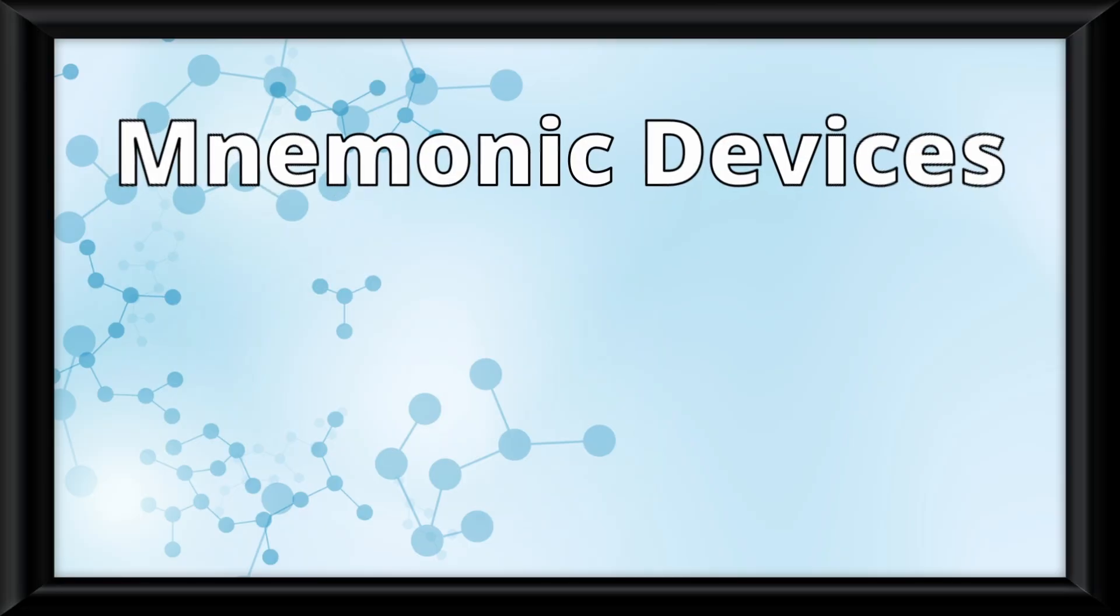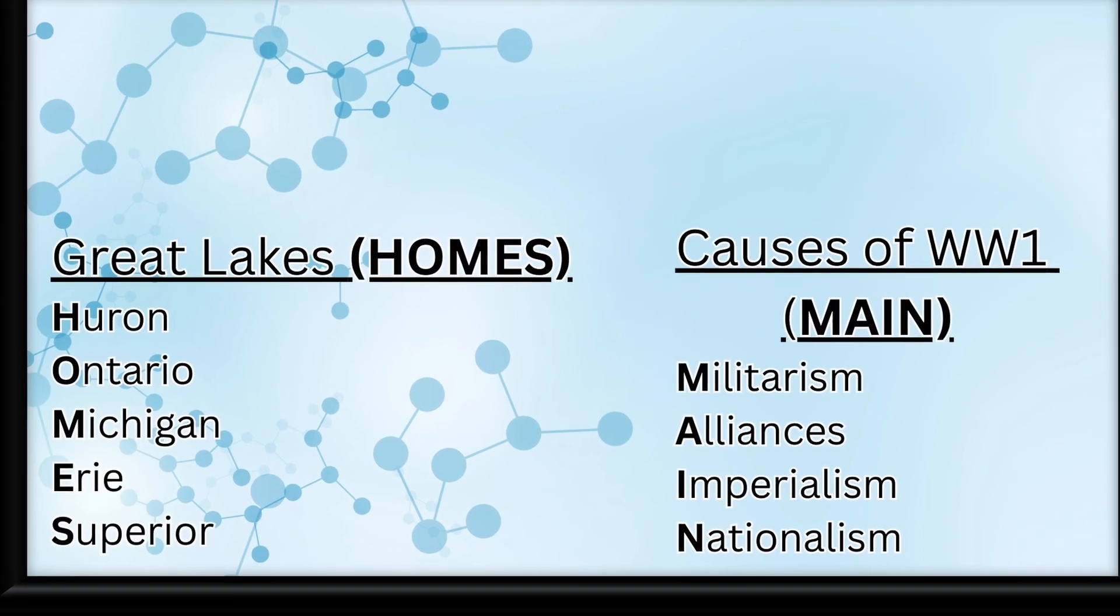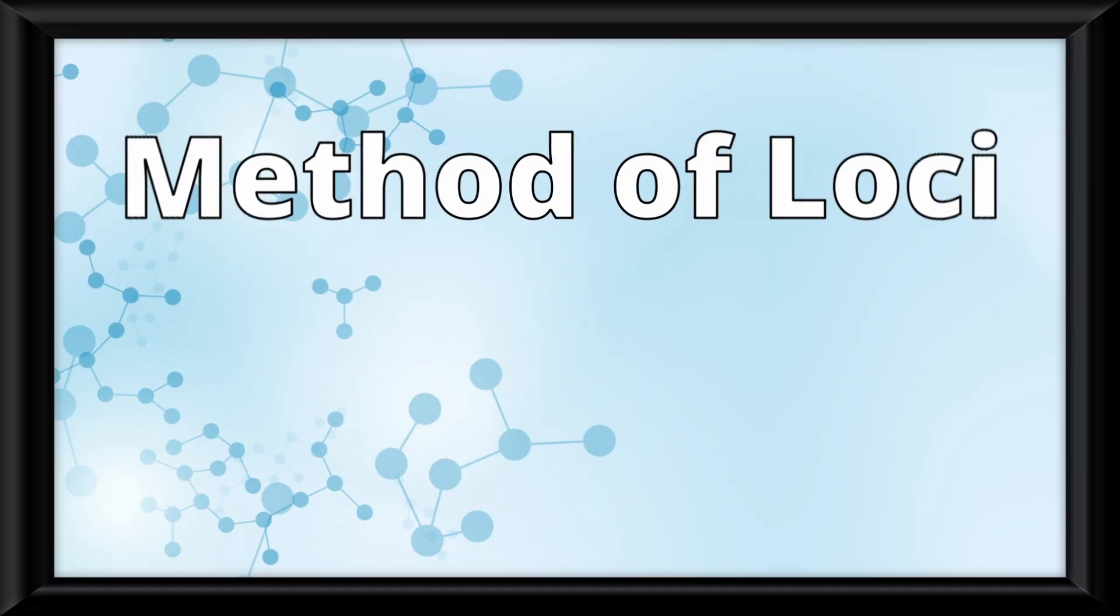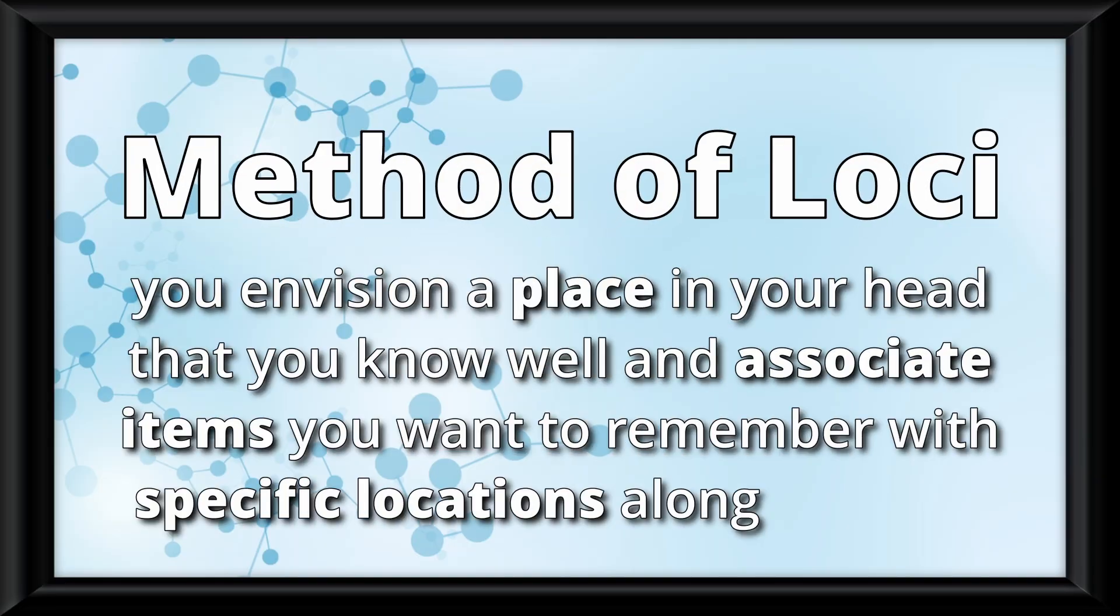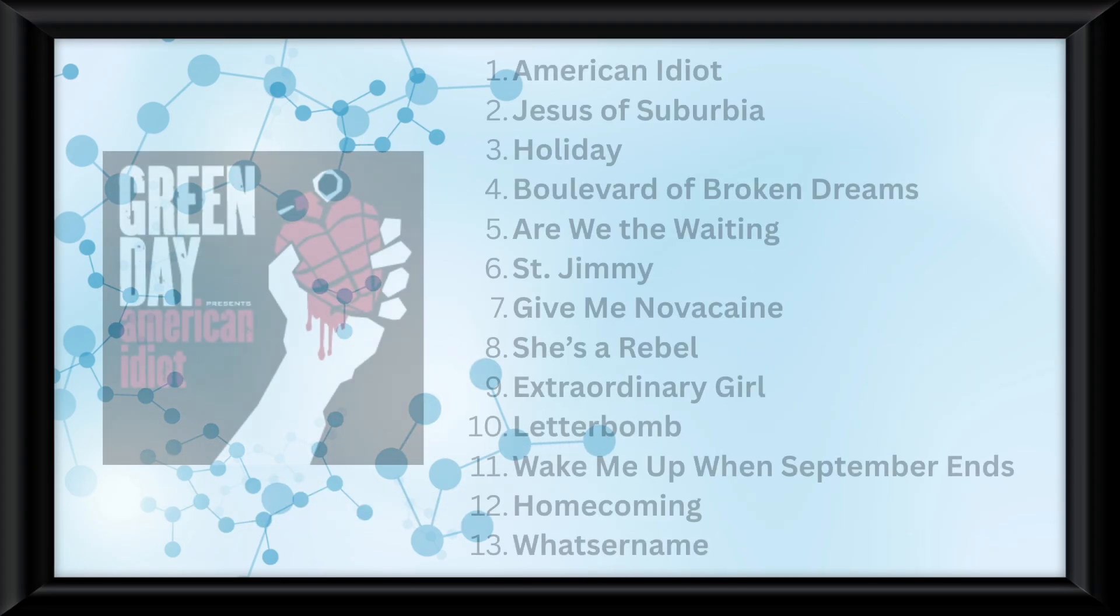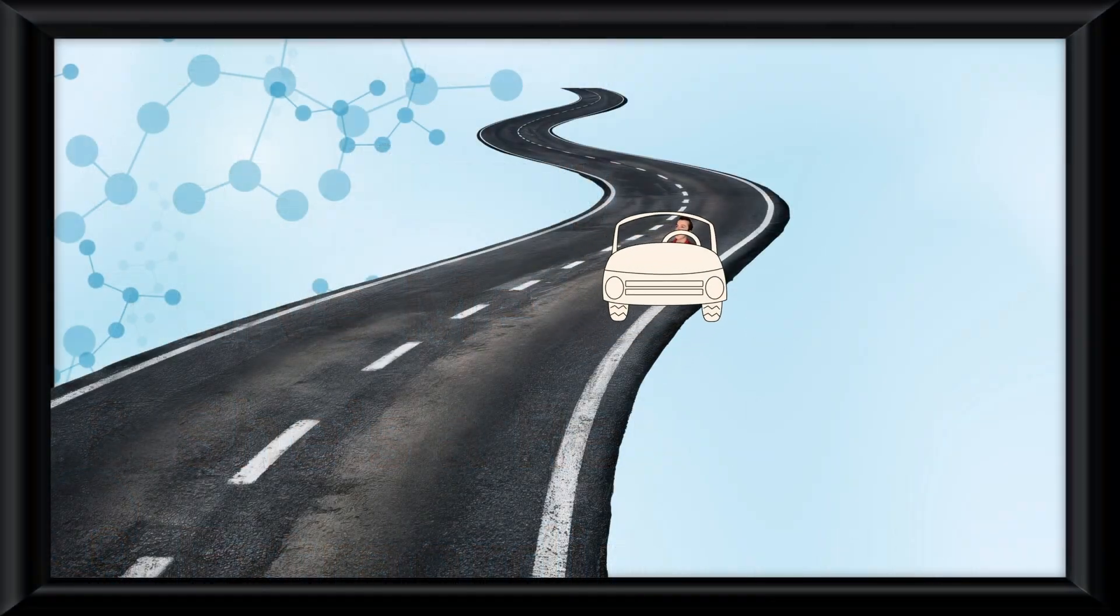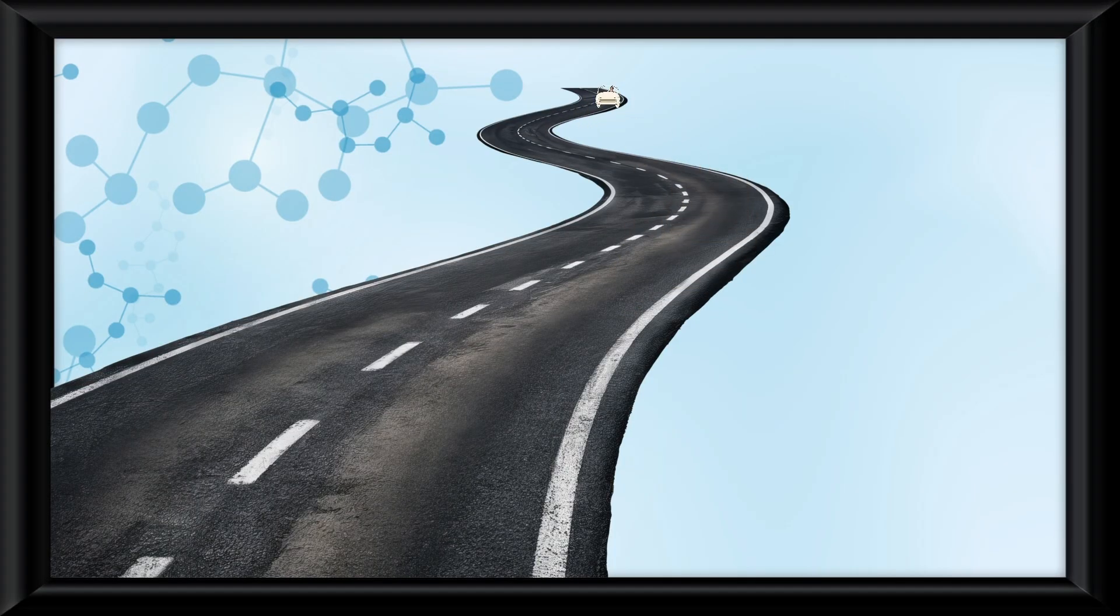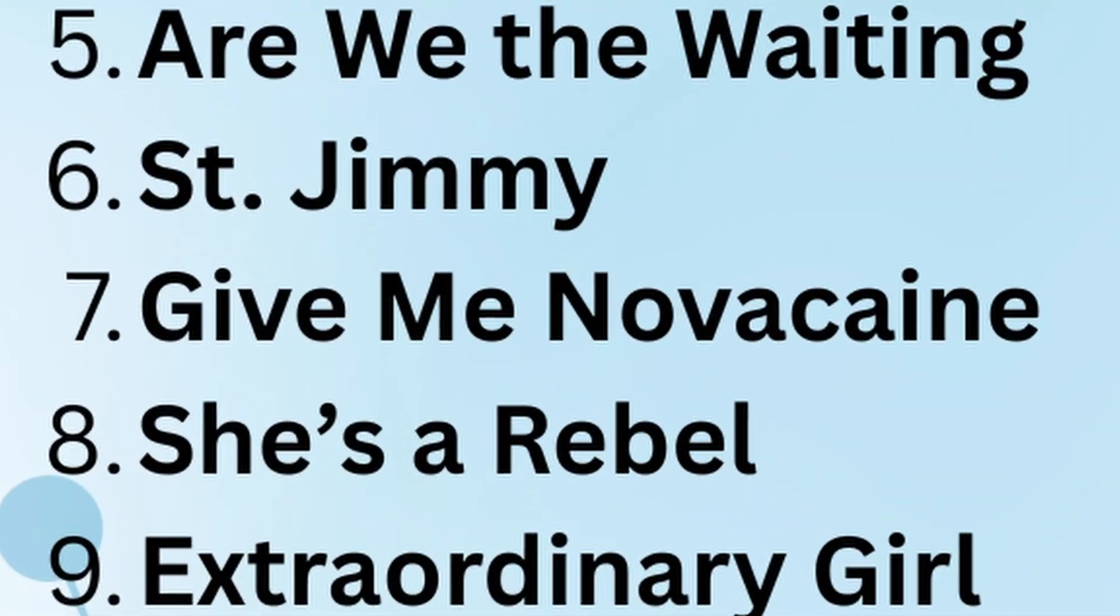First, let's talk about mnemonic devices. I'm sure you know what these are. There are plenty of examples. A good example you probably don't know is the method of loci. This is where you envision a place in your head that you know well, and associate items you want to remember with specific locations along the way. For example, if I wanted to remember the song Give Me Novocaine in American Idiot, I can envision my long drive to a summer camp I used to work at, and a hospital I always used to go by. I can associate Novocaine with that hospital, therefore helping me to remember the song name.